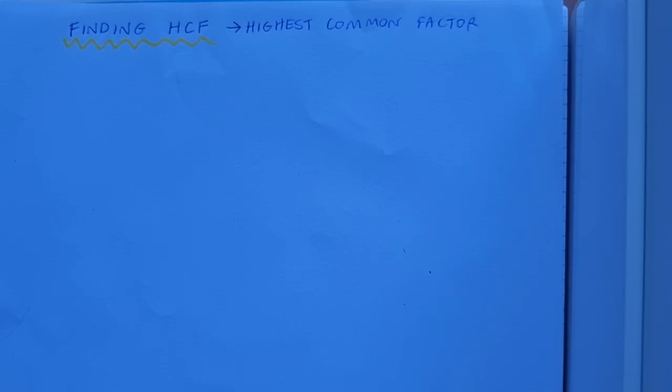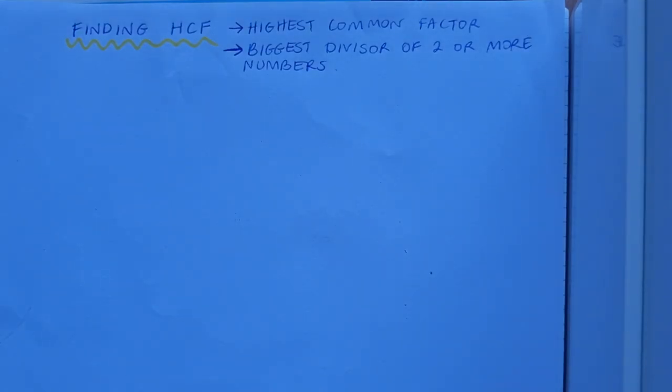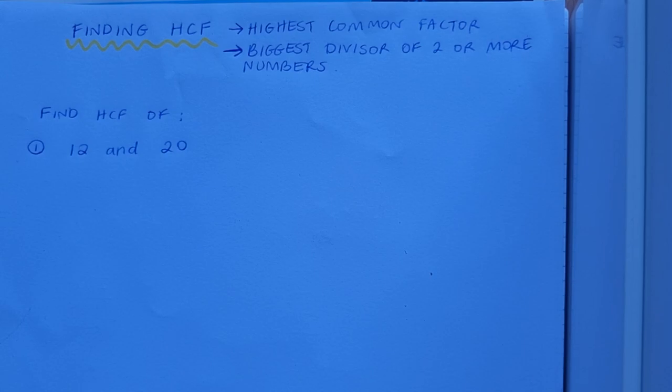This video shows you how to find HCF. That means highest common factor. In other words, that means the biggest divisor of two or more numbers. To do this I'm going to use prime factorization. For the first example we're going to find the HCF of 12 and 20.